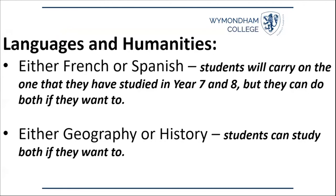To explain the choices students will have to make: the first isn't actually too much of a choice, and that is which language they will continue to GCSE. Students must choose either French or Spanish and should continue the language they have been studying in Years 7 and 8. If a student is a keen linguist, they can opt to study both languages. The second choice is whether they will continue with Geography, History, or both. All students must do at least one, but if they enjoy and have ability in both subjects, there is absolutely no reason why they cannot continue with both humanities.